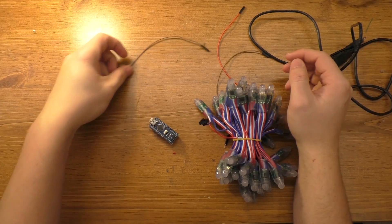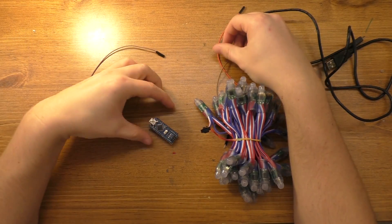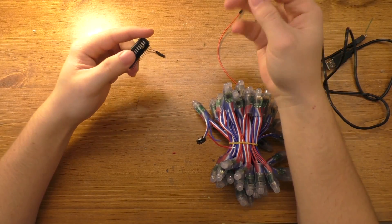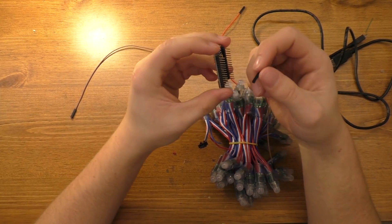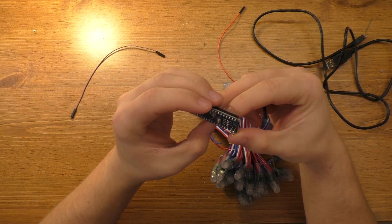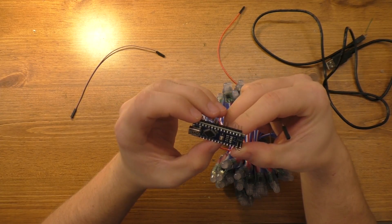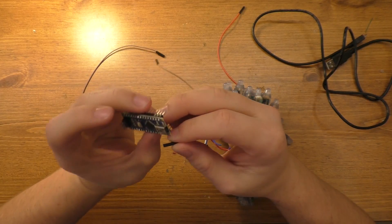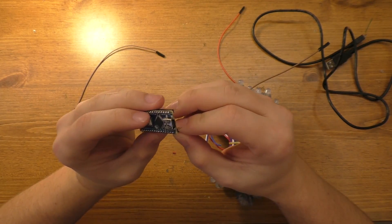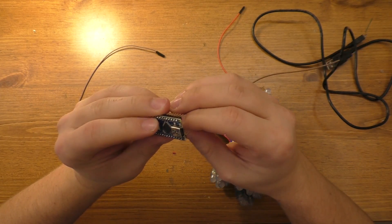If you remember from our Arduino sketch, the data pin that we set on this, or that was set by default, is pin number five. So we're going to go ahead and find digital pin five on this Arduino and hook up a little wire to it. So D5 looks to be this one.